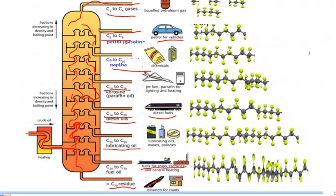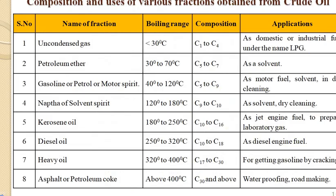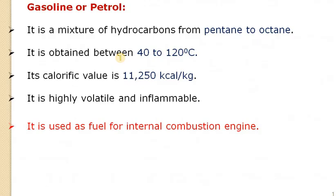Among all these fractions, three are considered the most important and in high demand: gasoline or petrol, kerosene, and diesel. Gasoline or petrol is the hydrocarbon obtained by breaking up heavier hydrocarbons into five to eight carbon chains, obtained around 40 to 120 degrees centigrade.